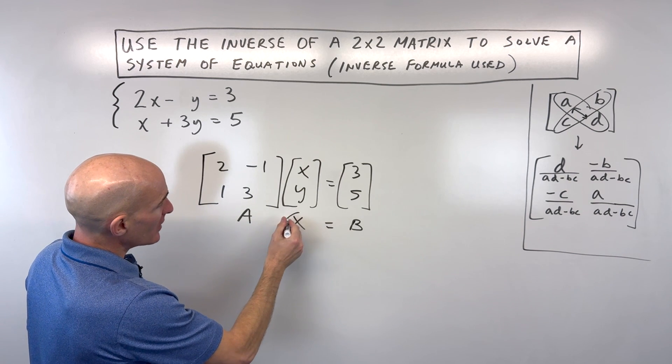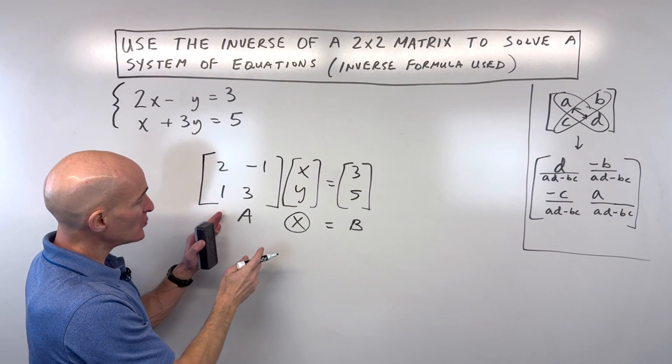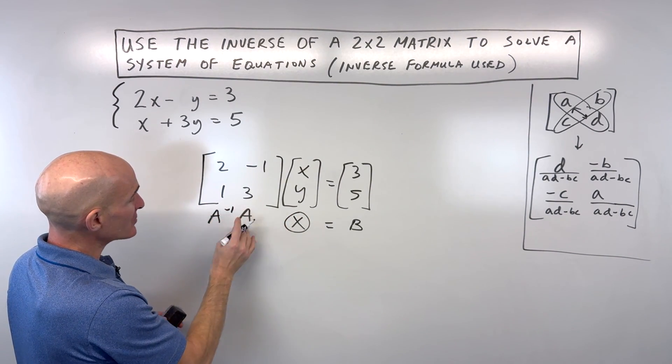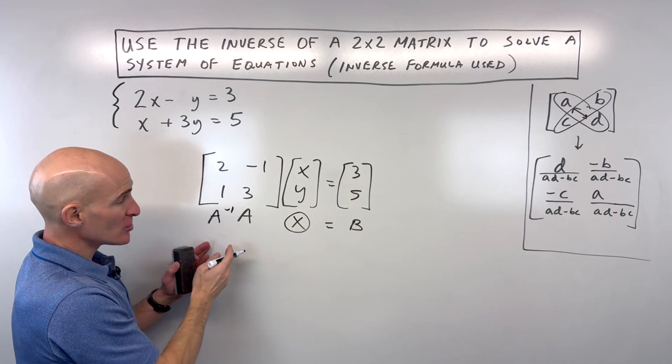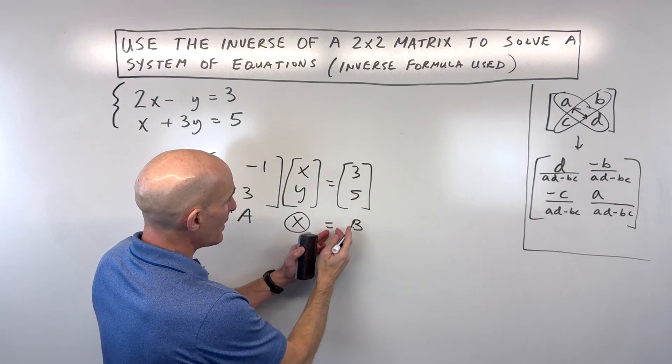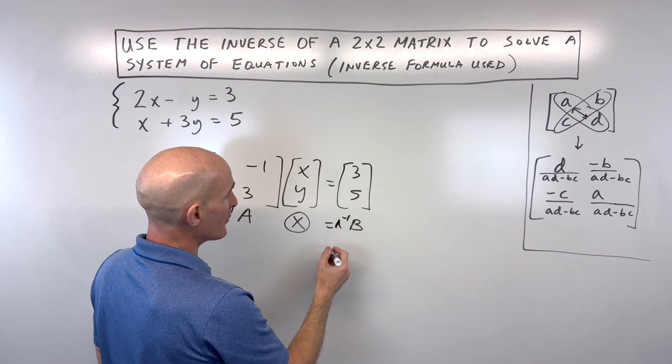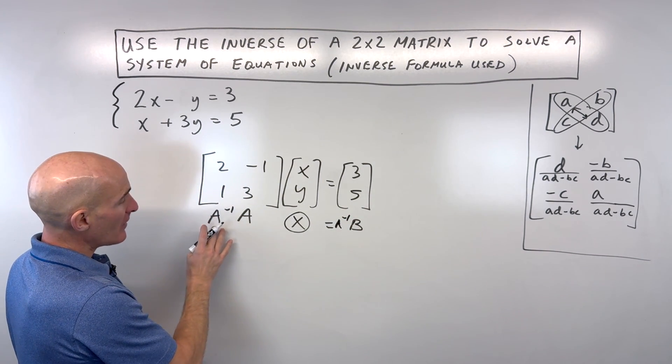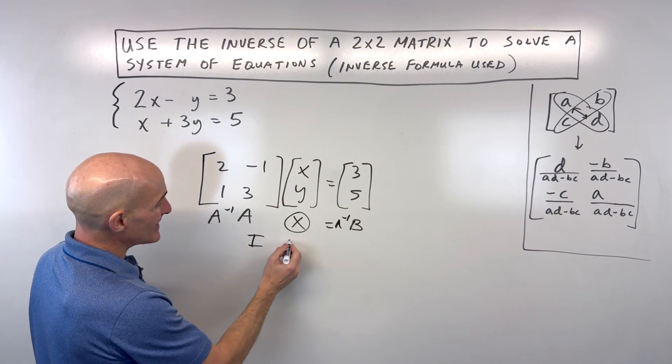Our goal is to get this variable matrix by itself. And the way that we do that is we multiply by the inverse of A, and you want to make sure if you multiply the inverse of A here on the left, you want to multiply it by the inverse of A here on the right. And when you multiply a matrix times its inverse, you get the identity matrix.